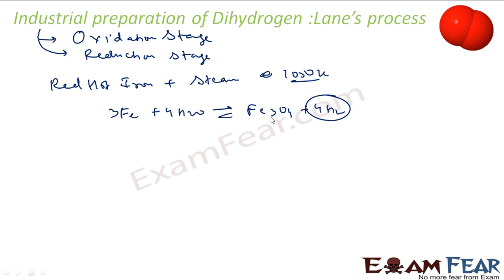Now my iron became Fe3O4. But we can't waste it, because we are saying that in industry we want to prepare hydrogen mass. We have done it, but we want to reuse it. So for reusing it we will go for reduction stage. This is oxidation stage.